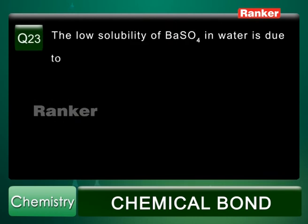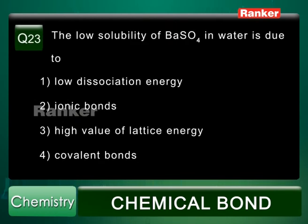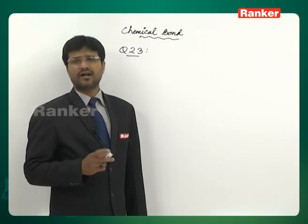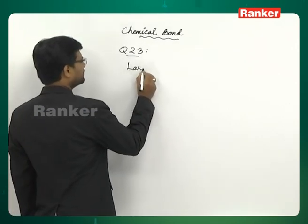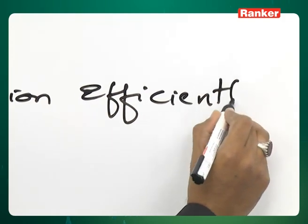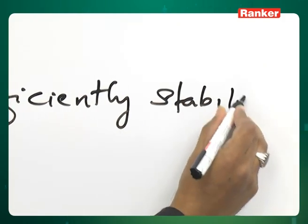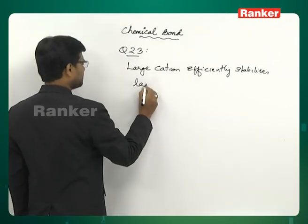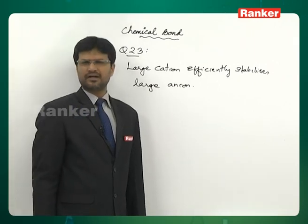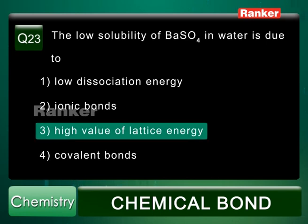Question number 23: The low solubility of barium sulphate in water is due to? Options: low dissociation energy, ionic bonds, high value of lattice energy, or covalent bonds. The correct answer is high value of lattice energy. Due to the large size of Ba2+, it efficiently stabilizes the large sulphate anion. Remember: a large cation efficiently stabilizes a large anion.